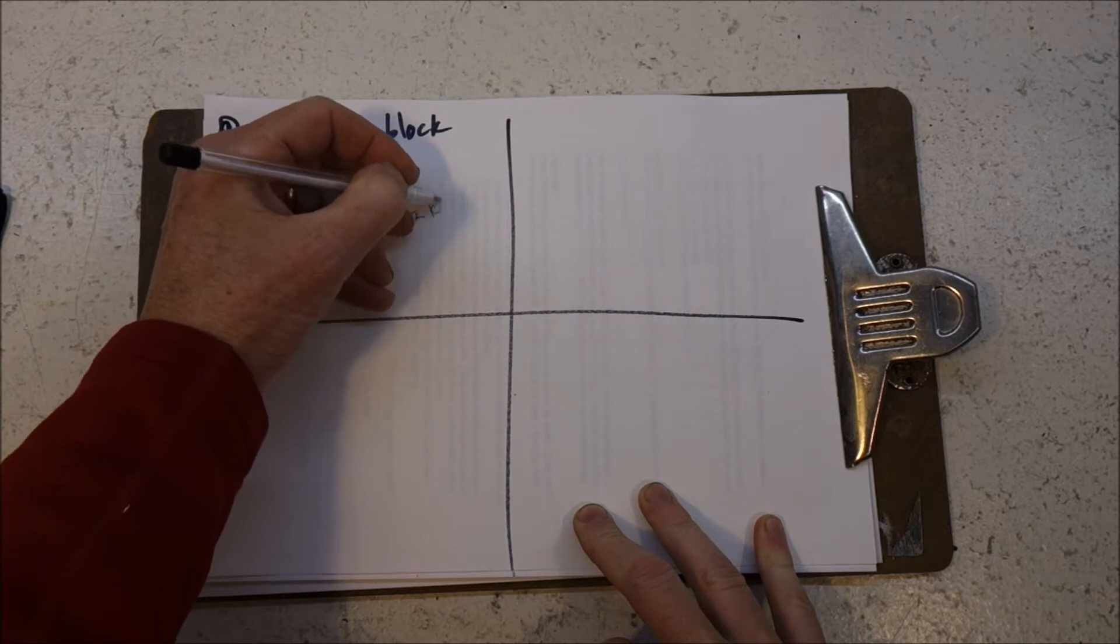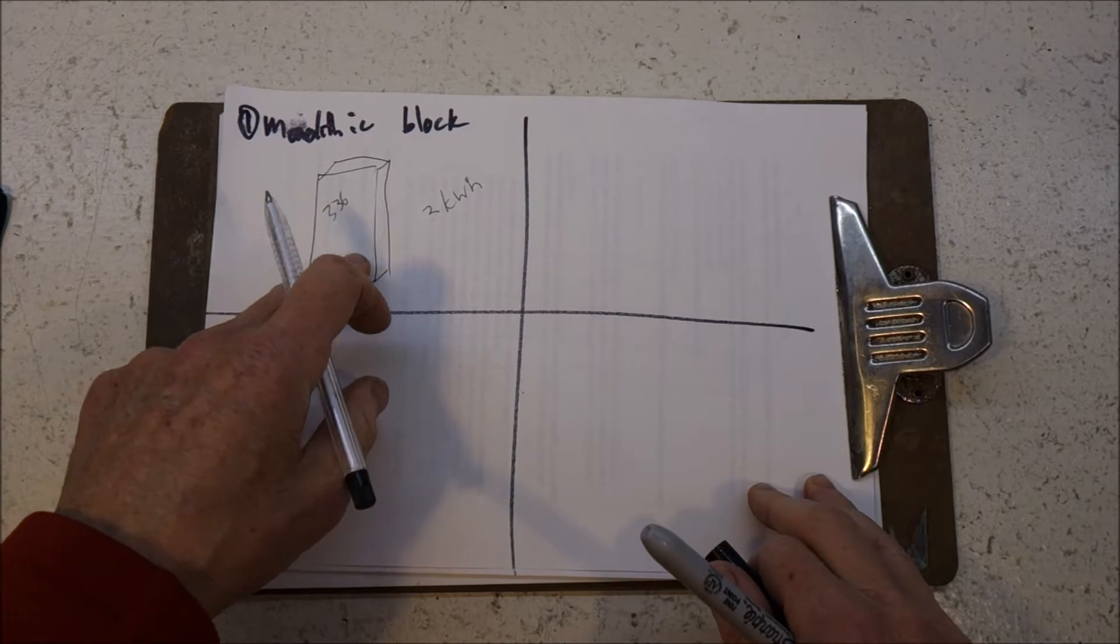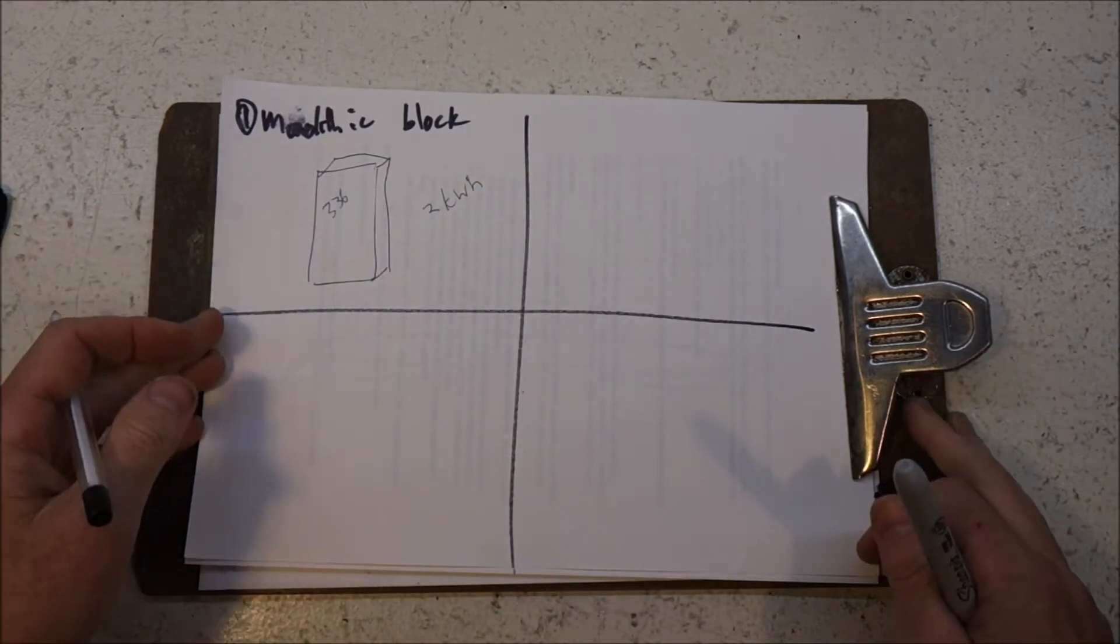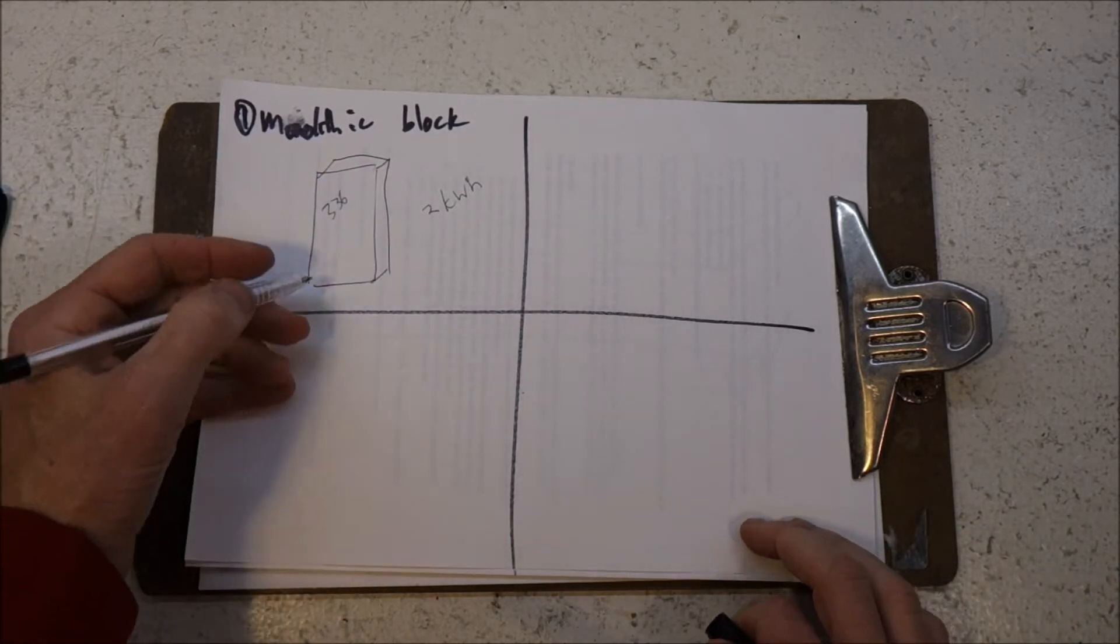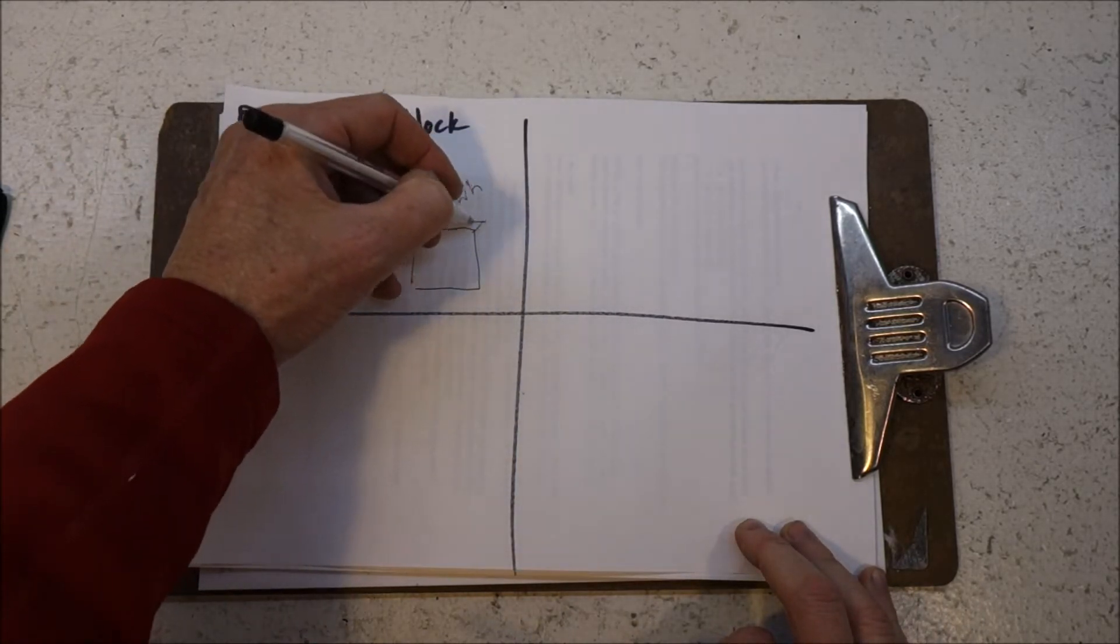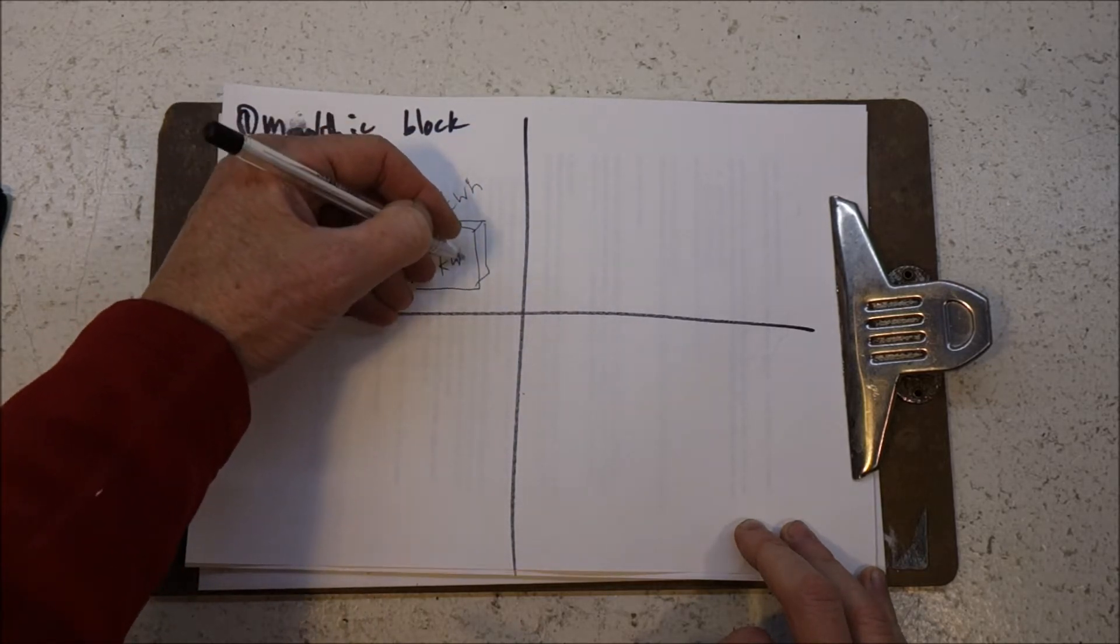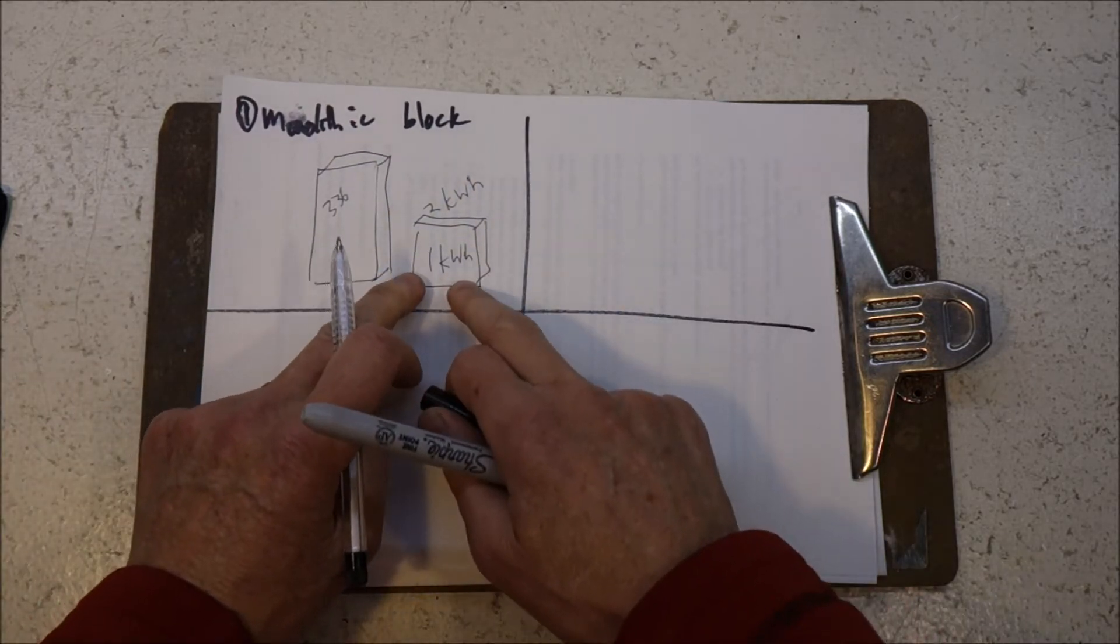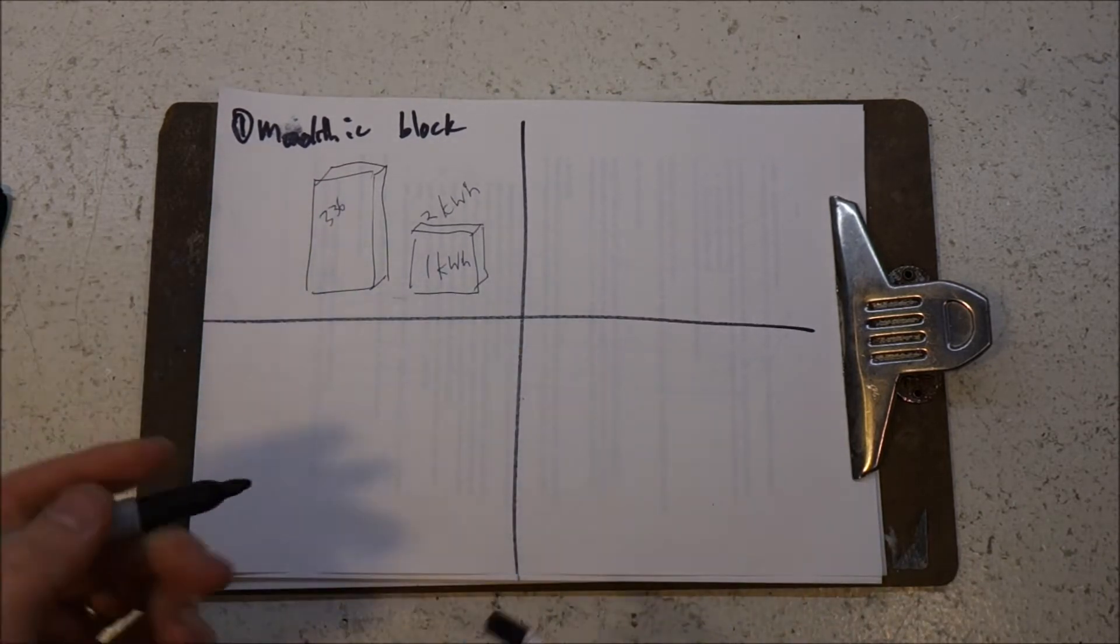Two kilowatt hours and my plan had been to just build more two kilowatt packs to build up a larger pack if I wanted to. But since discovering how heavy those are, the new plan could be to just build up one kilowatt hour blocks and then build ten of those to make ten kilowatt hours. So that's one perfectly reasonable option.